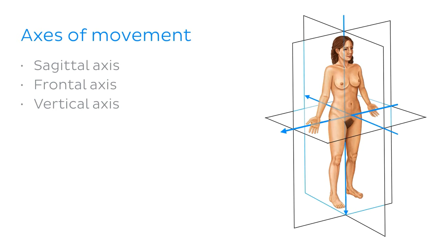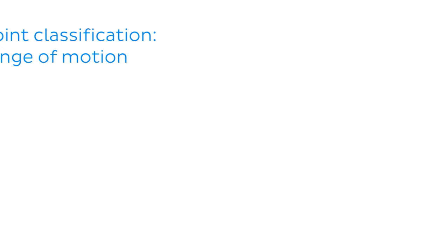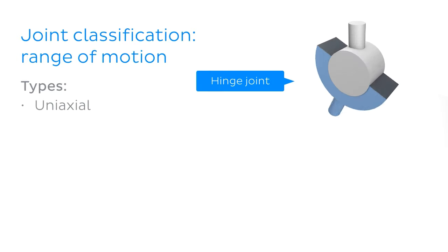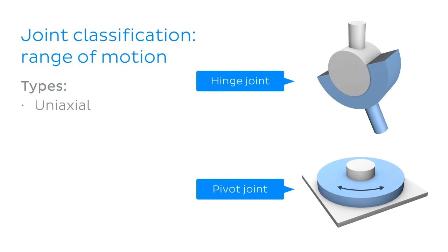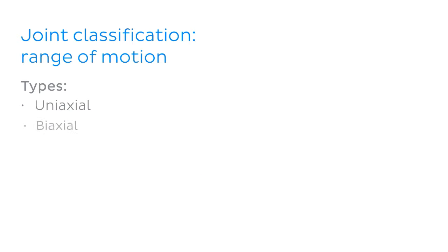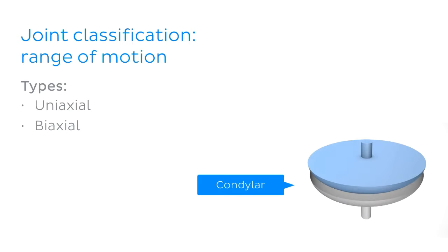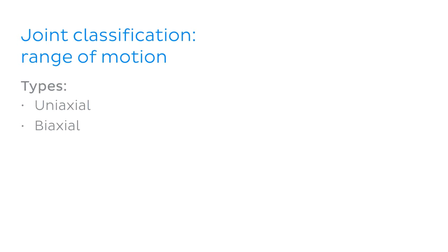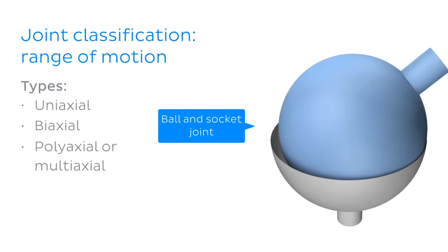We can then describe joints by the number of axes they can move along. Joints that can move back and forth along a single axis are called uniaxial. Examples of these are the hinge joint and the pivot joint. Joints that move about two distinct axes are called biaxial — for example, the condylar joint and the saddle joint. Finally, joints that can move through all three axes are called polyaxial or multiaxial. The only example of this is the ball and socket joint.